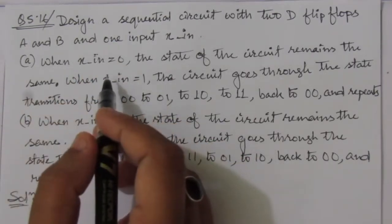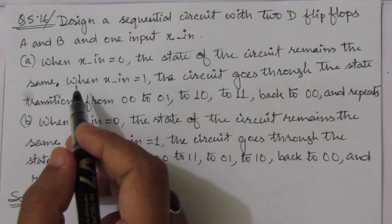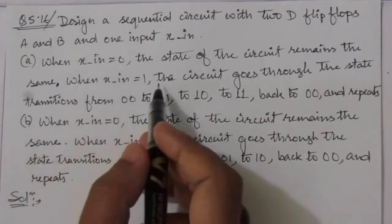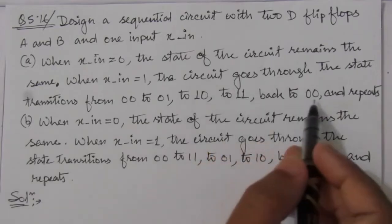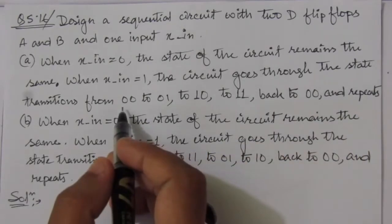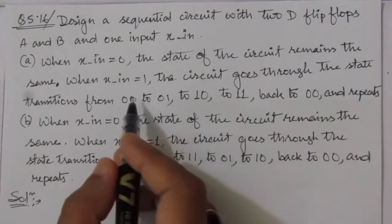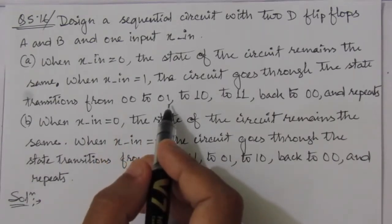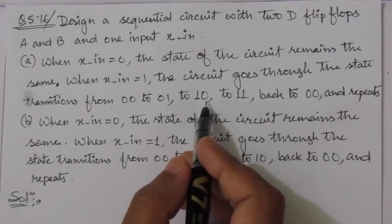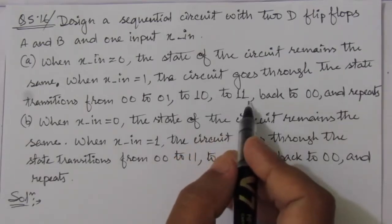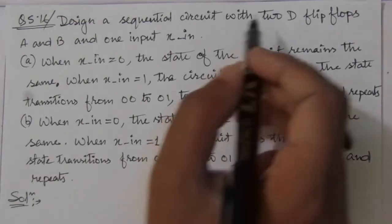In the first condition, when X_in is equal to 0, the state of the circuit remains the same — whatever we have at the present state, we will have in the next state also. When X_in is equal to 1, the circuit goes through state transitions: 00 to 01, to 10, to 11, and back to 00 and repeats. So whenever present state is 00 and input is 1, next state is 01; when present state is 01 and input is 1, next state is 10; when present state is 10 and input is 1, next state is 11; and when present state is 11 and input is 1, next state is 00.